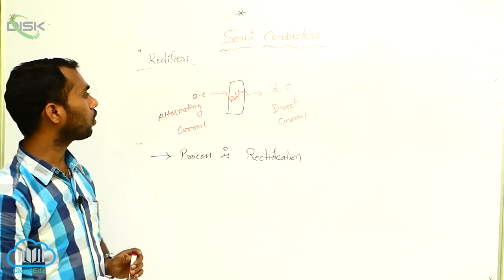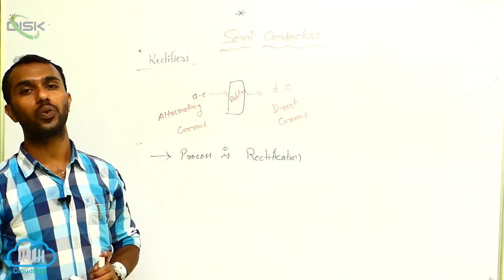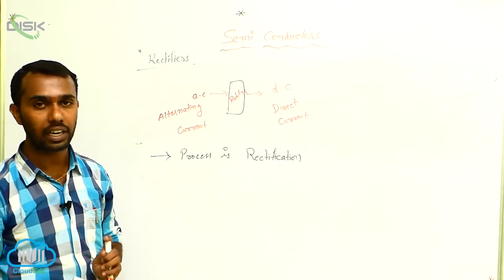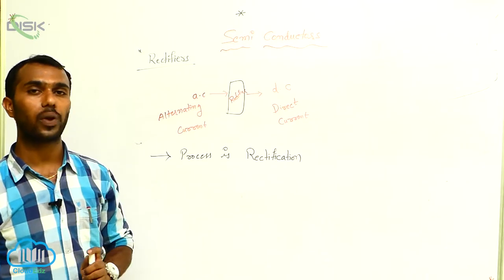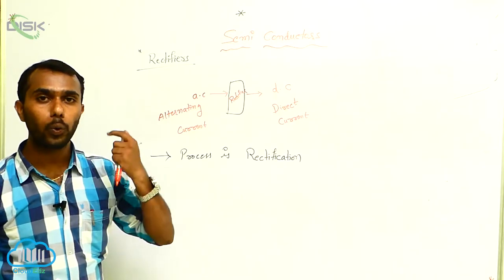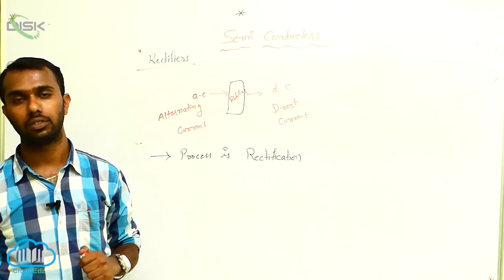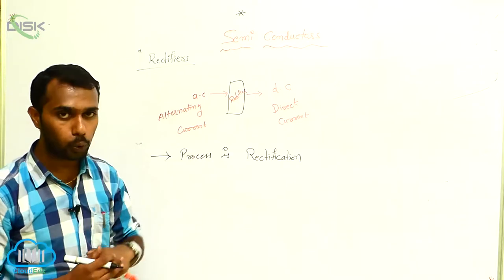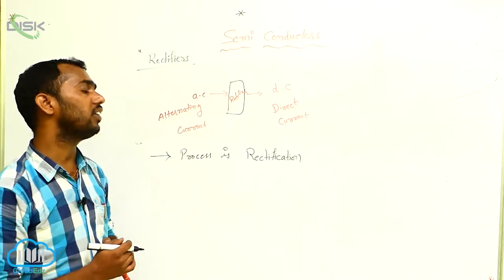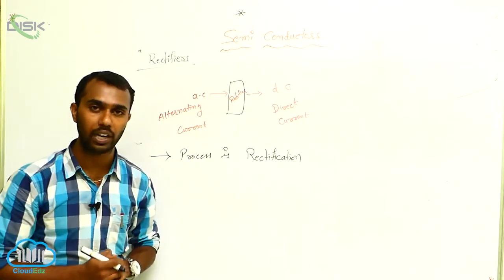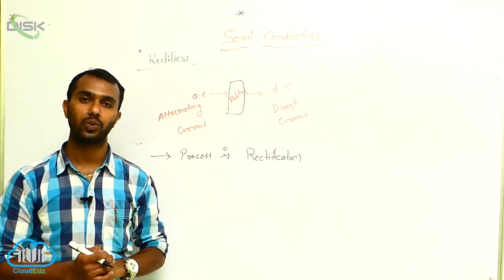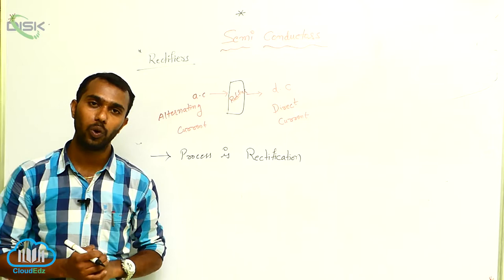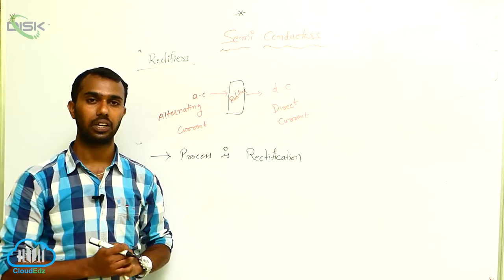How many types of rectifiers do we have? Generally, rectifiers are of two types. One is a half wave rectifier. The next one is a full wave rectifier.